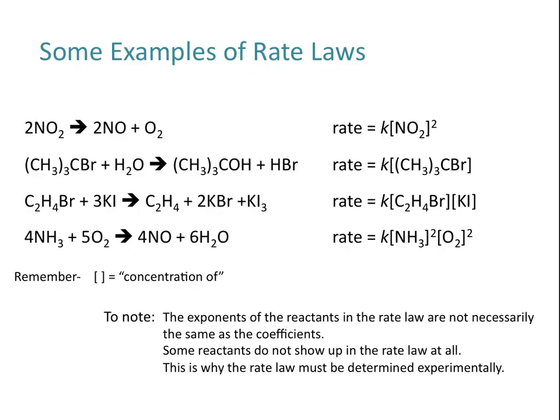Another thing to note is that you see this rate constant k in each of these rate laws. k is something that's specific to each reaction, so k would have a different value for each of the examples shown. In the next tutorial in this series, we'll actually look at how you can determine what the rate law is and how you can calculate k using experimental data.